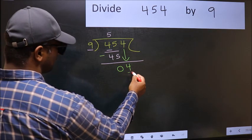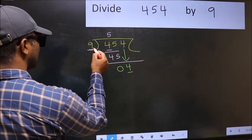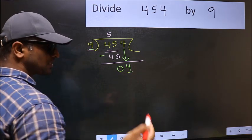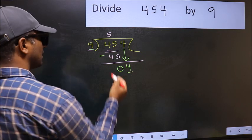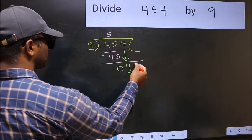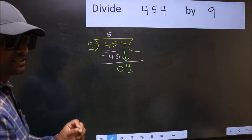Here we have 4 and here 9. 4 is smaller than 9. So what many do is they directly put dot and take 0, which is wrong.